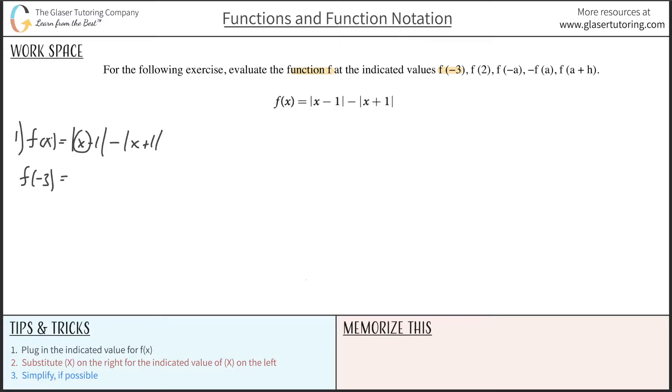Anywhere I see x on my right hand side, I'm going to substitute in the value within the parentheses here, negative 3, because that's what the problem is saying. The problem is saying that for x, plug in negative 3. So let's do that. So there's going to be negative 3 minus 1, absolute value, minus negative 3 plus 1.